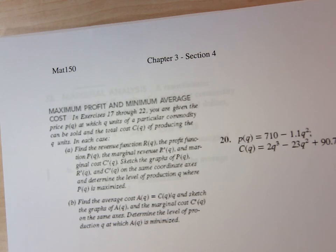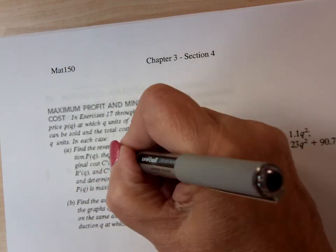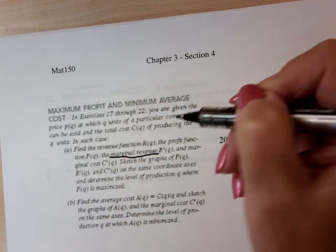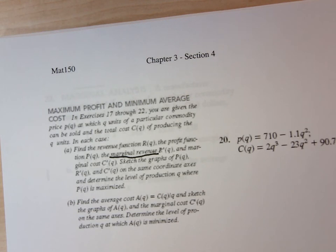Part A, find the revenue R(Q). The profit function P(Q), and this is what we need to talk about right here, is we have not done anything with marginal. Marginal revenue R'(Q), marginal cost C'(Q). Don't worry about sketching the graphs, you can do that with your calculator. And determine the level of production Q where P(Q) is maximized.